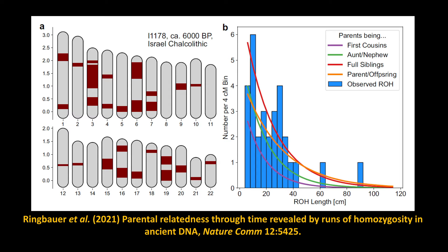Looking at the different relatedness levels, this person is probably a full sibling match — meaning the parents were brother and sister, or perhaps an aunt-nephew relationship. You can't know exactly because there are probabilities to apply. All we know is that this person was very inbred and the parents were very closely related.